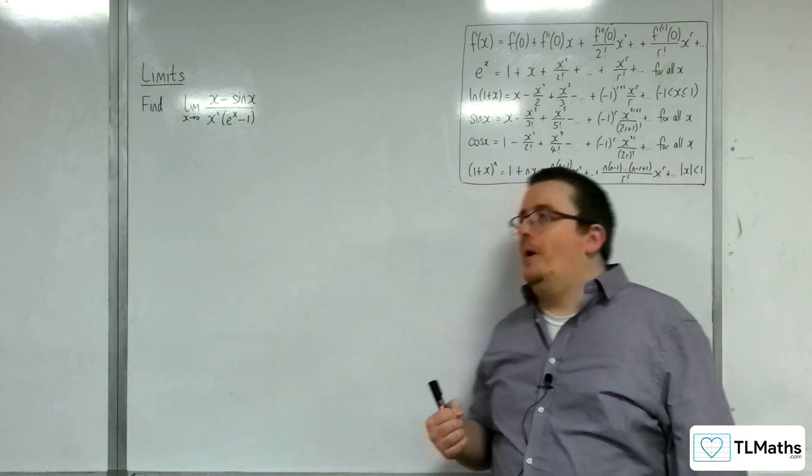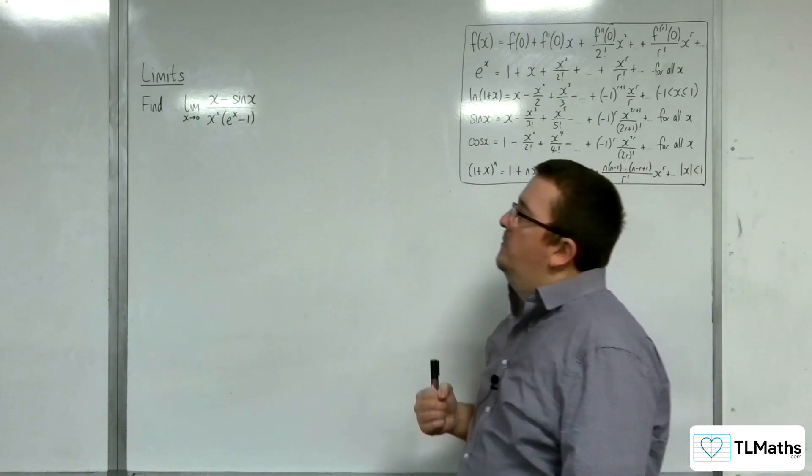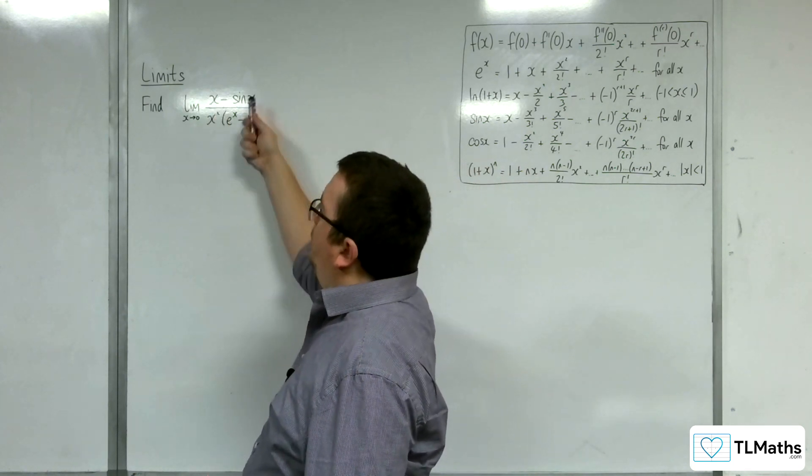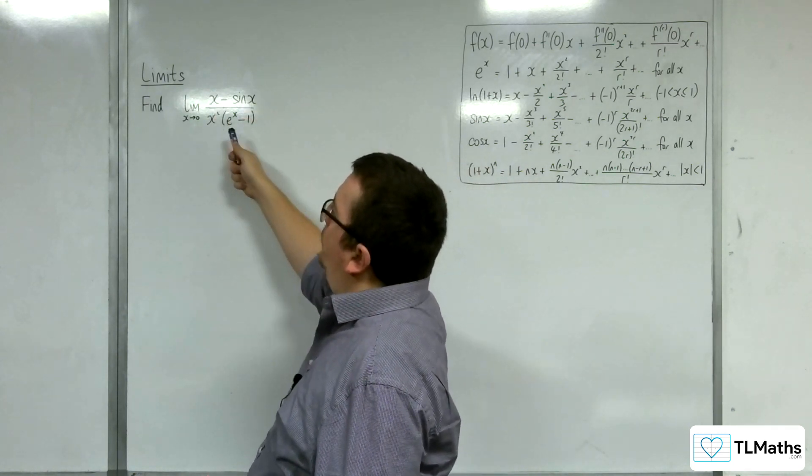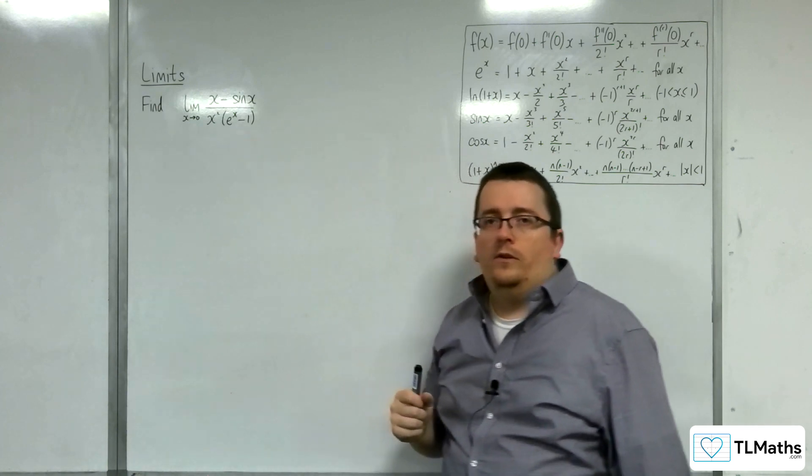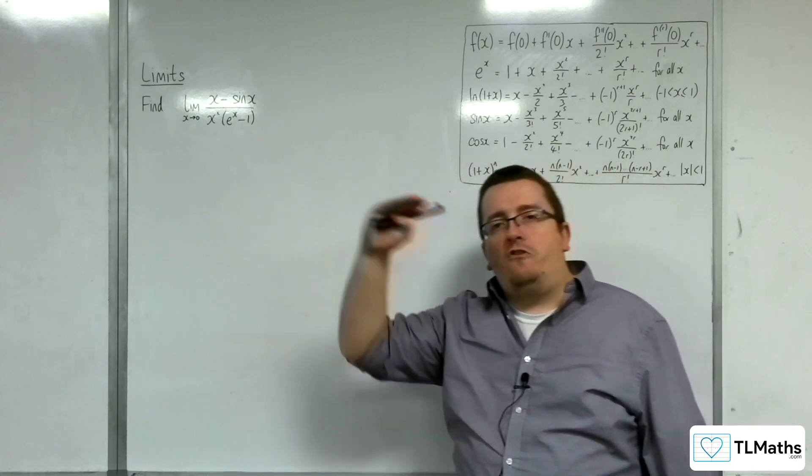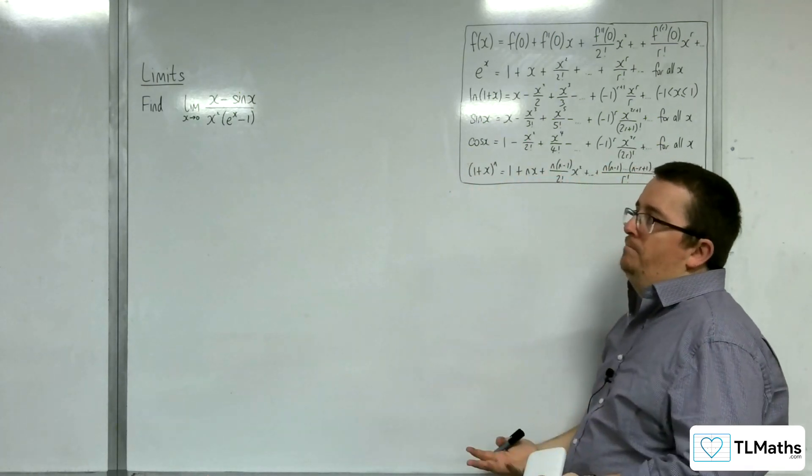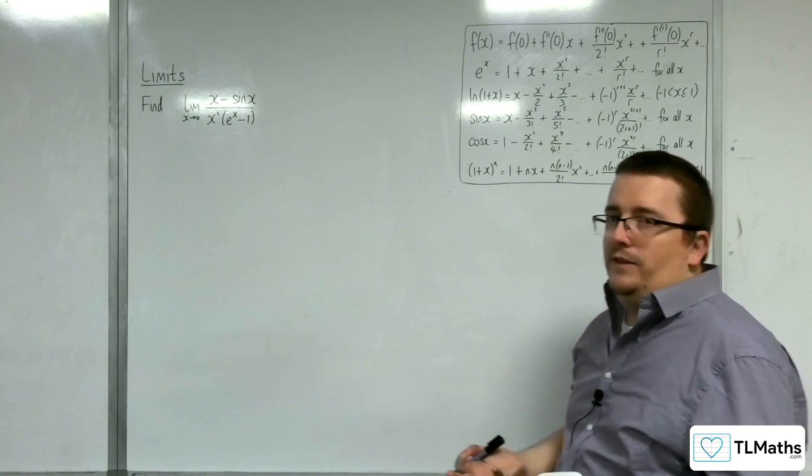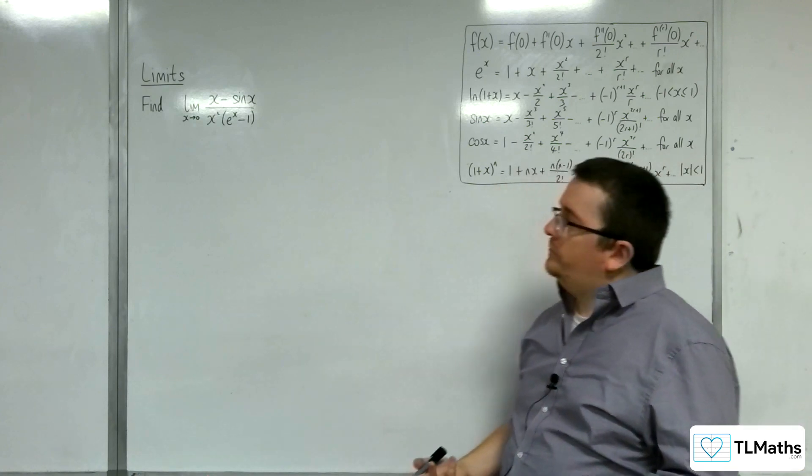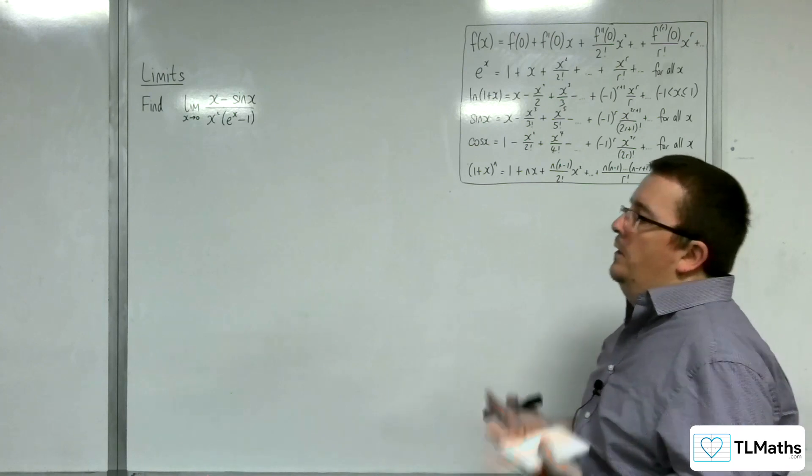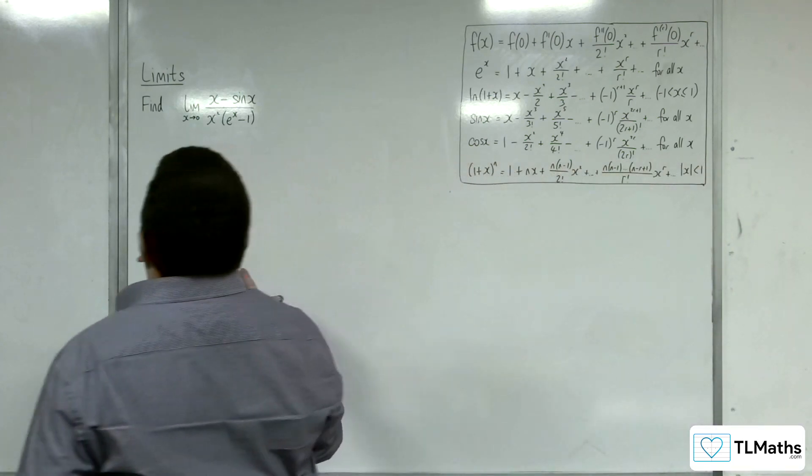But if you do substitute x as 0 into the top and bottom of this fraction, we're going to get 0 take away 0, so 0 on the top, and 0 times 0, so 0 on the bottom. So you get 0 over 0. So if both your numerator and denominator evaluate at 0, there is a problem. So how can we find the limit of this function?